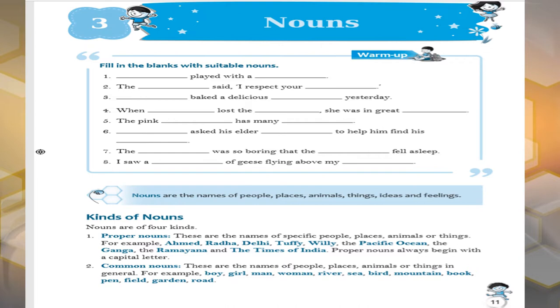So children, basically, we will do kinds of nouns. We have four types of nouns in class 6: proper nouns, common nouns, collective nouns, and abstract nouns.